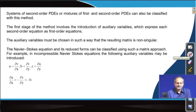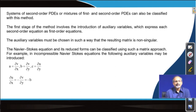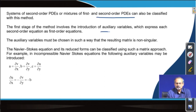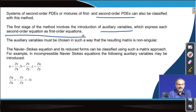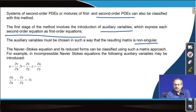For second-order partial differential equations like the incompressible Navier-Stokes equations, because of the presence of viscous stresses there are second-order partial derivatives. How do we handle such equations when we just learned to handle first-order systems of PDEs? Here we introduce so-called auxiliary variables so that we can convert the second-order PDEs into first-order equations. The auxiliary variables must be chosen carefully because the resulting matrix A needs to be non-singular — this is a very important issue.